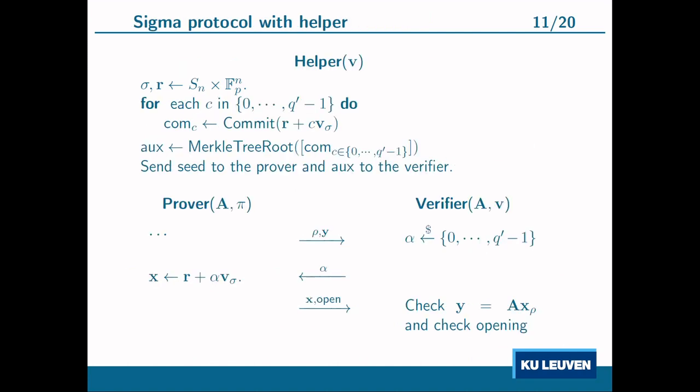In the real sigma protocol with helper, the helper samples σ and r, precomputes all commitments the prover might send for every possible challenge, and commits to all of them in a Merkle tree. This is feasible because there are only polynomially many elements in the challenge space. The helper sends the Merkle tree root to the verifier and the seed to the prover. The protocol then proceeds as before, except the prover must open one of the helper's commitments and include a Merkle tree path to prove correctness. This ensures the prover sticks to the protocol, yielding a sound sigma protocol with helper with soundness error 1/q'.